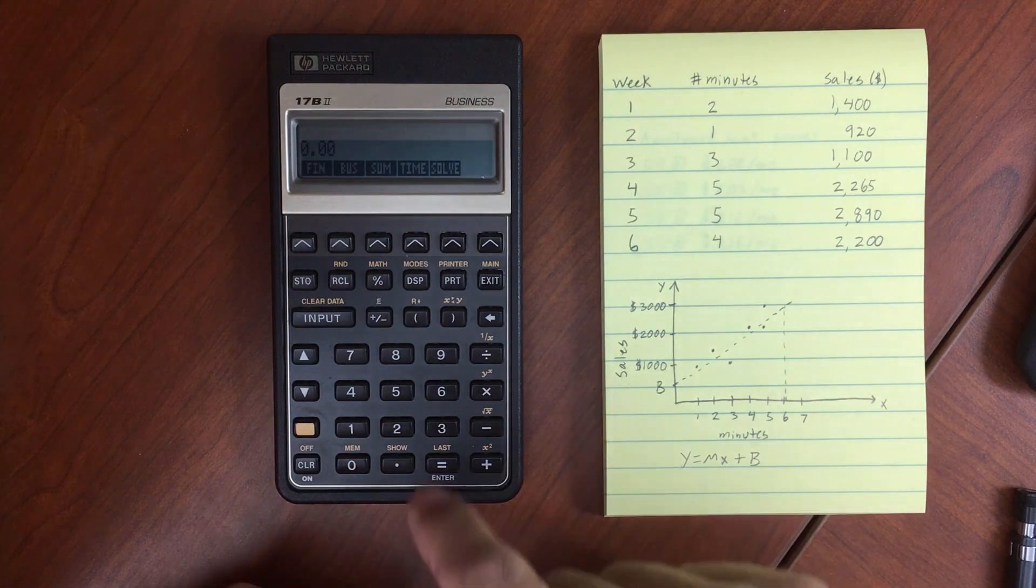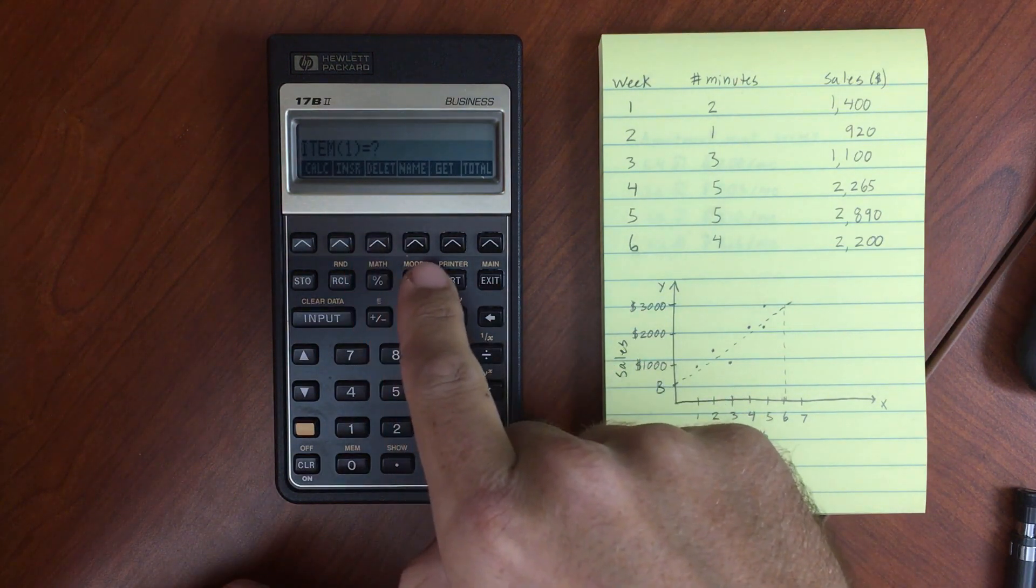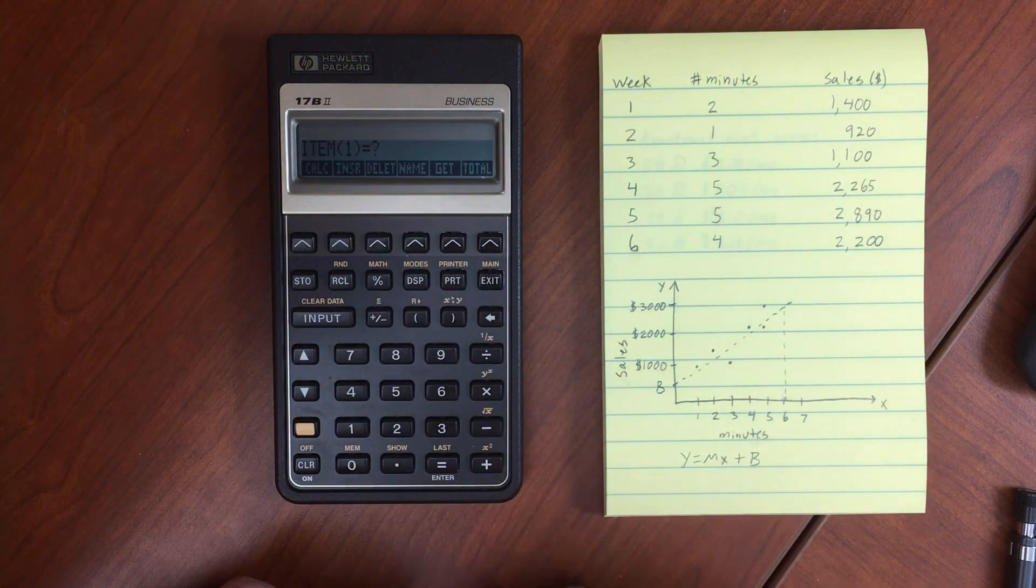Okay, so now to look at two variable statistics. So that's in the sum menu, and then you need to create your two lists.